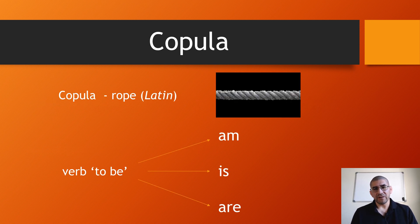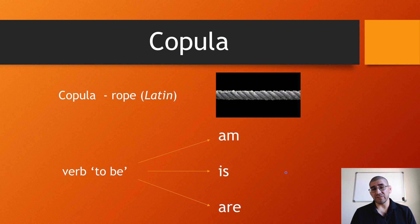The copula — 'copula' in Latin means a rope or cord — is the verb 'to be,' because this verb acts as the cord joining together the subject term and the predicate term. When we put something in logical form, we're going to be using the present tense form of the verb 'to be,' which is 'am,' 'is,' and 'are.'